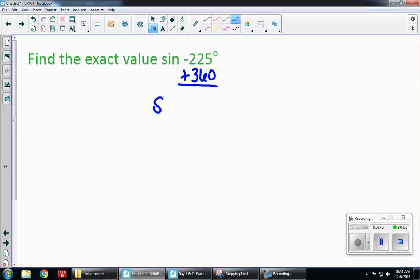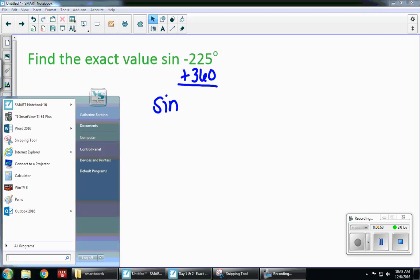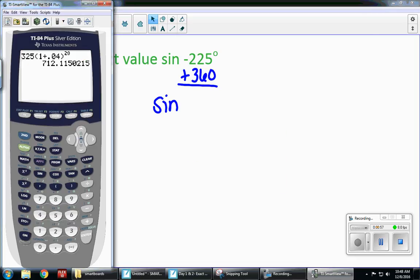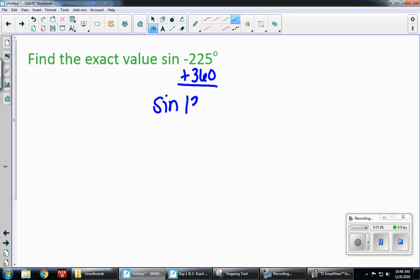And that's the sine value that I'm going to find instead of the negative 225. So if I take out my calculator, I can type this right in. I can hit negative 225 plus 360, so I end up with 135. And I'm going to find the sine of 135.